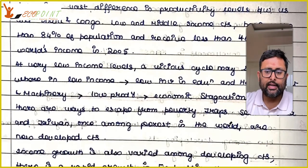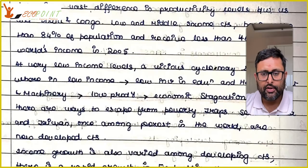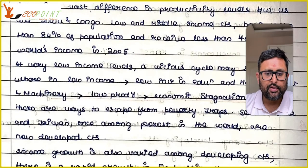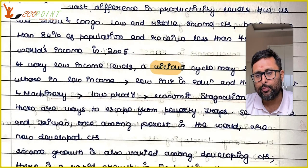Such a huge amount of income is going to just 16% of the population of developed countries. At very low levels of income, there is something called the vicious cycle of poverty.